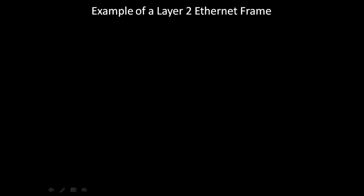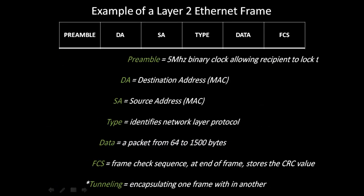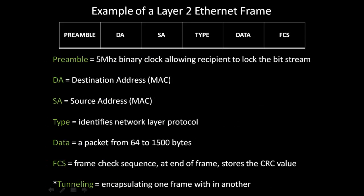Here we have an example of a layer 2 Ethernet frame, which has six fields. The first, the preamble, is a 5 MHz binary clock allowing the recipient to lock the bitstream. The next two are the destination and source MAC addresses, required for the packet to leave its source and reach its destination. The type field identifies the network layer protocol being utilized. The data field is a packet from 64 to 1500 bytes. Finally, the frame check sequence, or FCS, stores the CRC or cyclical redundancy check checksum value.